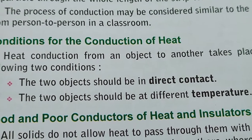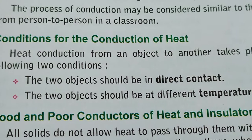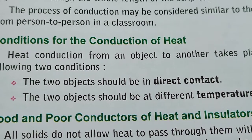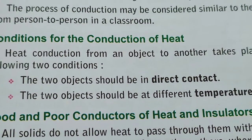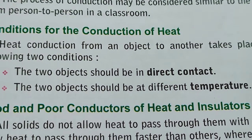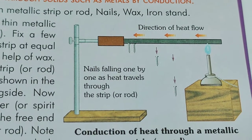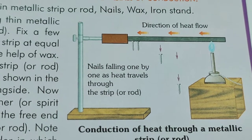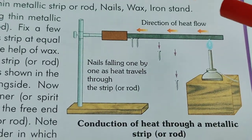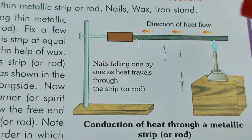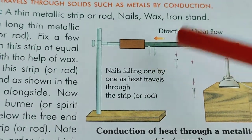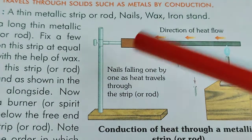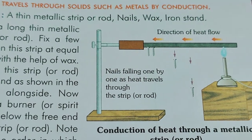There are two conditions for conduction of heat in a solid. Number one, the objects should be in direct contact. Number two, the objects should be at different temperatures. In this activity, we can see that the temperatures at the two ends of the rod are different, and therefore there is transfer of heat from the hotter end towards the cooler end.